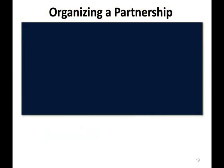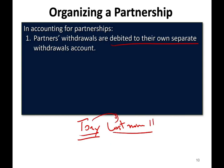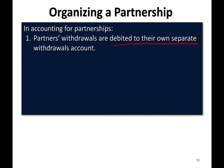When accounting for a partnership, each partner's withdrawals are debited to their own separate account. In practice, when I worked with a pizzeria that had about 10 locations in the Lehigh Valley, there were multiple partners all named Tony with the same last name. We needed to make sure which Tony took money out, because each Tony had their own separate withdrawal account, just like each Tony had their own capital account.